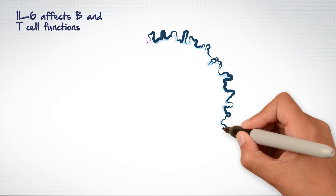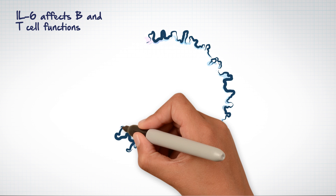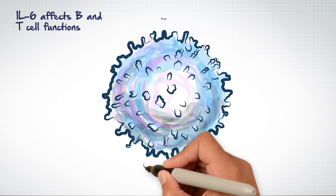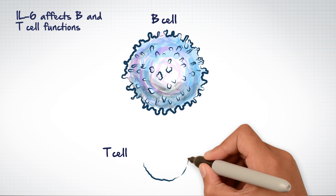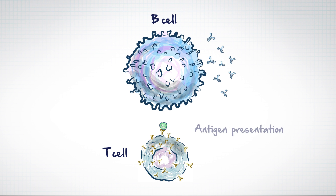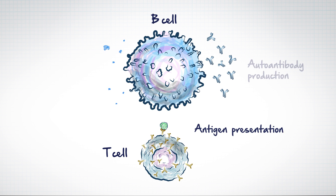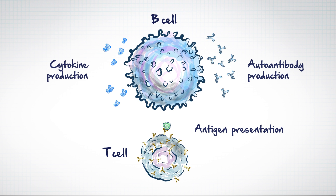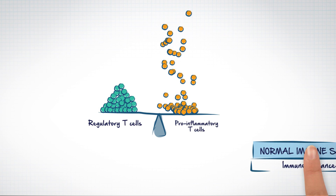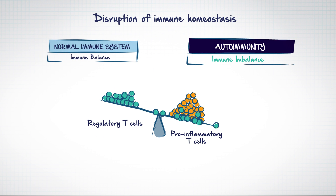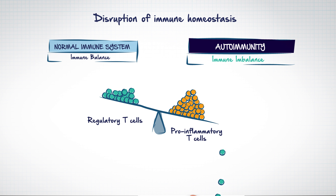IL-6 contributes to RA through its effects on both B and T cell functions. IL-6 stimulates B cells that contribute to the pathogenic process through antigen presentation and autoantibody and cytokine production. Immune homeostasis is disrupted as IL-6 alters the fine ratio between pro-inflammatory and regulatory T cells.